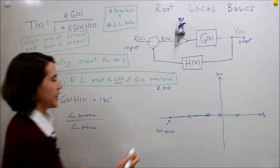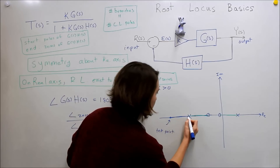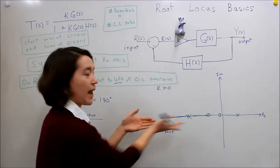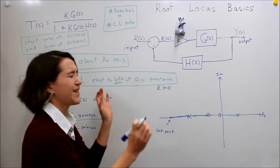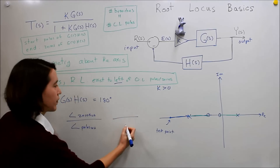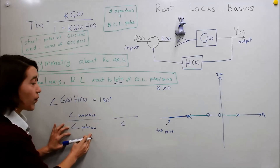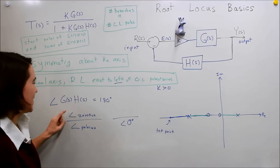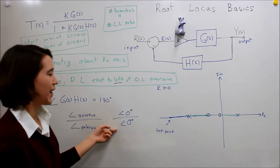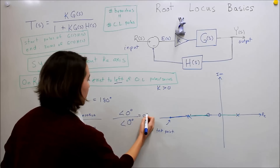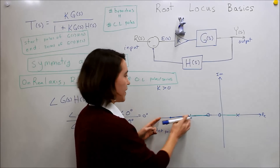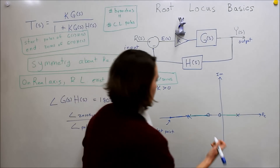If we take a test point and draw vectors on the real axis — we draw one vector to each pole, and both vectors point in the zero-degree direction. So the angle from this test point to all poles is zero degrees, and similarly the vectors to the zeros are also zero. When we subtract them, both are zero, so our overall angle is zero degrees. That does not match 180, so any test point to the right of all poles and zeros is not on the root locus.